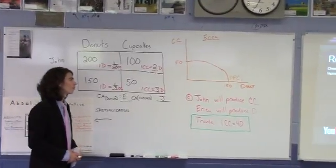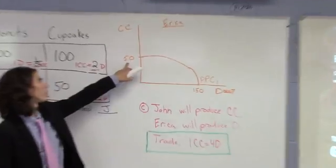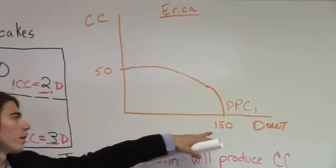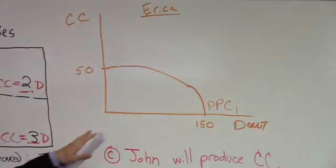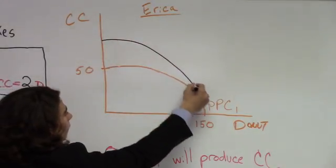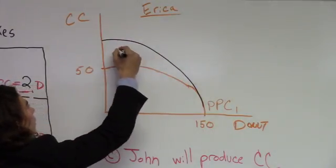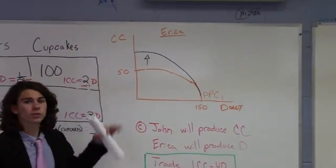So, on our production possibility curve, we already have the before curve set up with her 50 cupcakes and 150 donuts. And if Erica were to find a new technique to produce cupcakes, it would increase like this. So, there would be a shift in the graph up towards cupcakes.